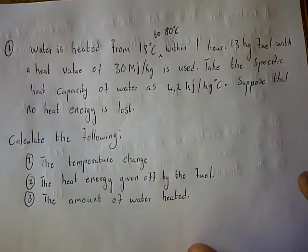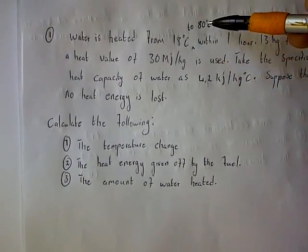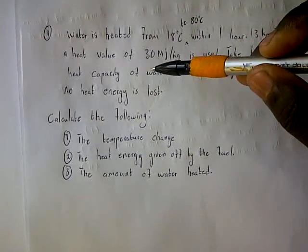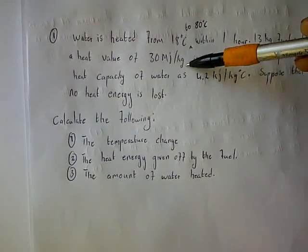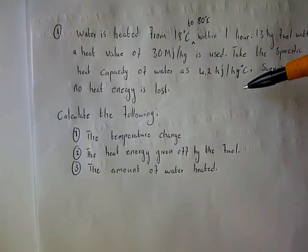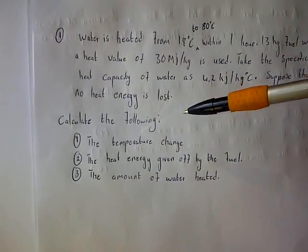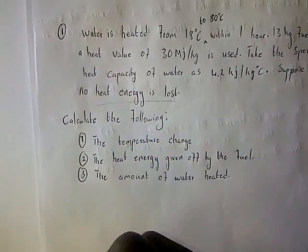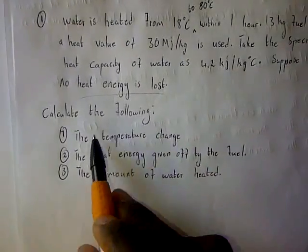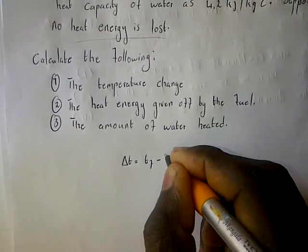Now let's look at a question from a past paper. Water is heated from 18 degrees to 80 degrees within one hour. 13 kg of fuel with a heat value of 30 megajoules per kg is used. The specific heat capacity of water is 4.3 kilojoules per kg per degree Celsius. Suppose that no heat energy is lost. First, calculate the change in temperature: change in temperature equals final temperature minus initial temperature.